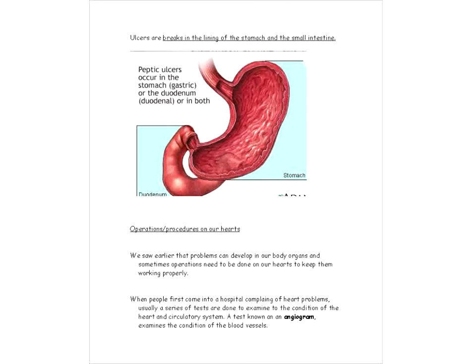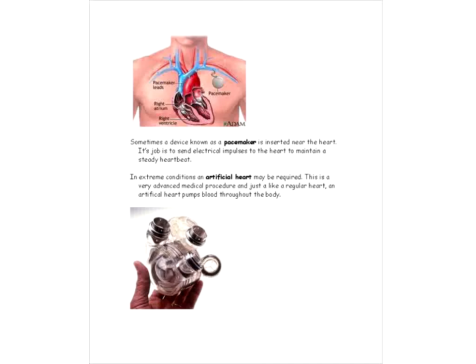Okay. So, let's look at some different procedures or operations that we can have done on our hearts. We saw earlier that problems can develop in body organs, and sometimes operations need to be done on our hearts to keep them working properly. Now, when people first come into a hospital complaining of heart problems, usually a series of tests are done to examine the condition of the heart and the circulatory system. A test known as an angiogram examines the condition of the blood vessels. Now, sometimes a device known as a pacemaker is inserted near the heart. Its job is to send electrical impulses to the heart and maintain a steady heartbeat. So, of course, you want that thing working really well. Another type of device you want working really well is an artificial heart. It looks like this. It's a very advanced medical procedure or medical device, I should say. And just like a regular heart, its job is to pump blood throughout the body.